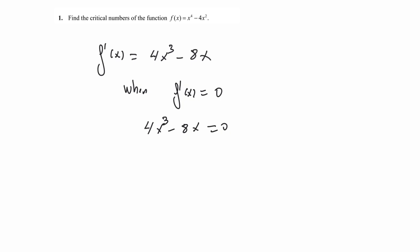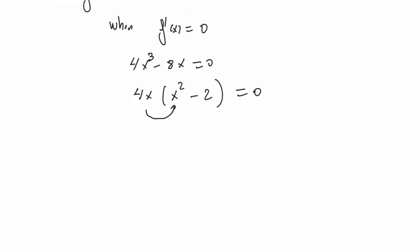We factor this expression as 4x times (x squared minus 2) equals zero. This is zero when x equals zero, because 4 times zero is zero, and zero minus 2 is minus 2, and minus 2 times zero is zero. So x equals zero satisfies the equation.